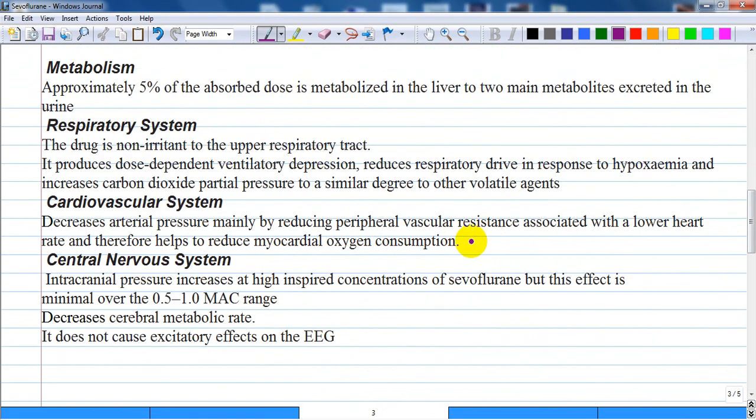Metabolism of sevoflurane: approximately 5% of the absorbed dose is metabolized in the liver to two main metabolites. The major breakdown product is organic fluoride which is excreted in the urine as a glucuronide conjugate.